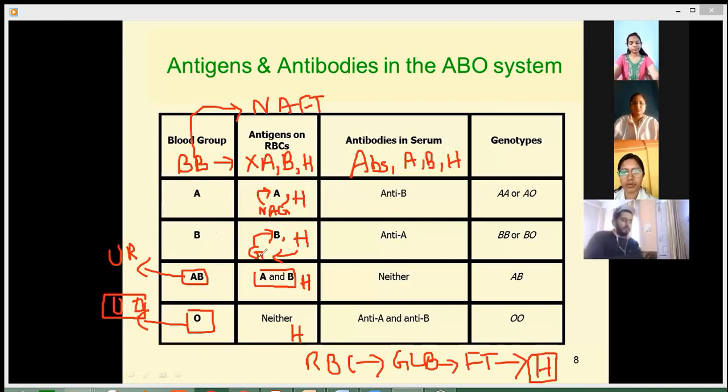H antigen will interact with galactose. When it interacts with galactose, it will form B antigen. So blood group B on the RBCs has B antigen present and H antigen present.